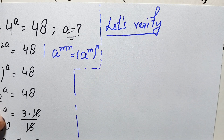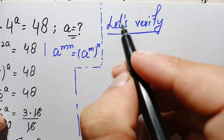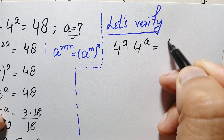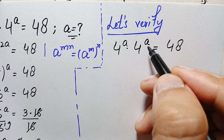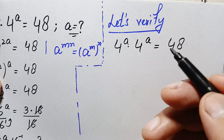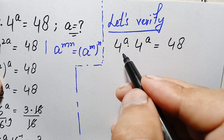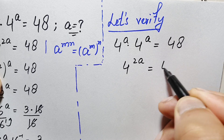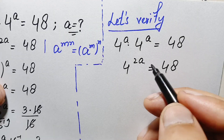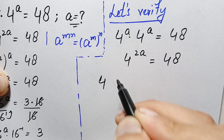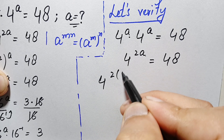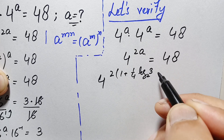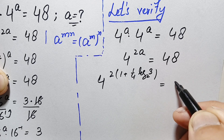To verify the value of a, we read our problem again: 4 raised to power a times 4 raised to power a equals 48. Before substituting the value of a, we simplify the left hand side first. Since the base is the same, we add the powers: 4 raised to power 2a equals 48. The value of a is 1 plus one-fourth times log base 2 of 3.